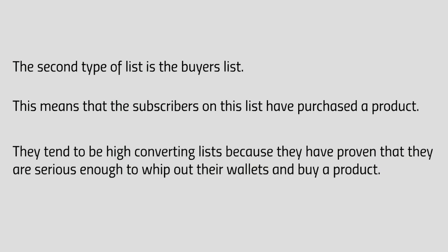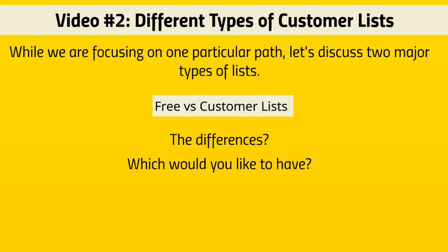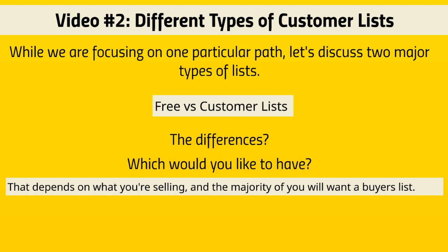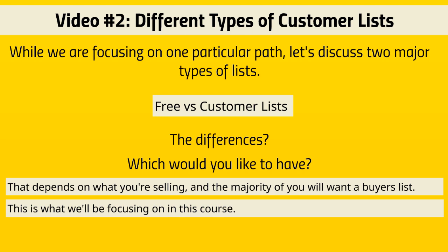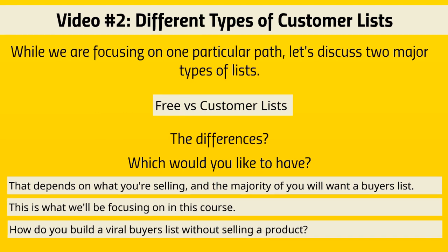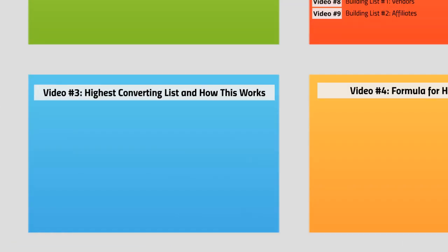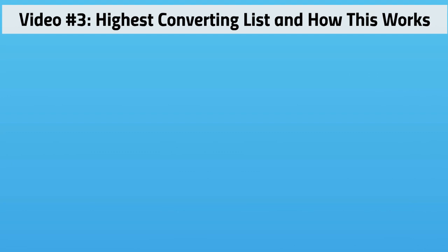These types of lists tend to be very high converting because subscribers have proven they're serious enough to whip out their wallets or credit cards and buy a product. So which would you rather have — the free list or the customer list? The majority of times you'll want the buyer's list, and that's what we're focusing on. The question is: how do you build a viral buyer's list without selling a product? The secret is you get other people to build the list for you.